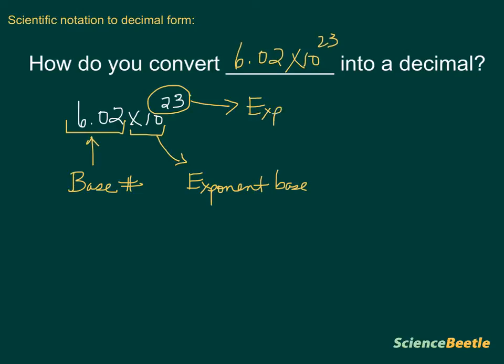This exponent here tells us the number of spaces that are between the decimal and the final number. The way we do this is, if we look at this carefully, let's go ahead and write this number out. Notice we're going to have 6.02, so we'll put that there: 6.02.